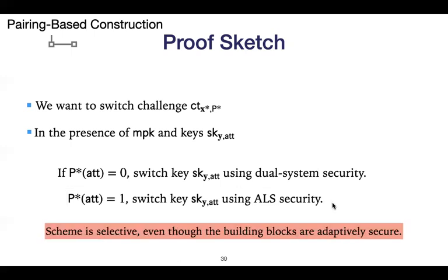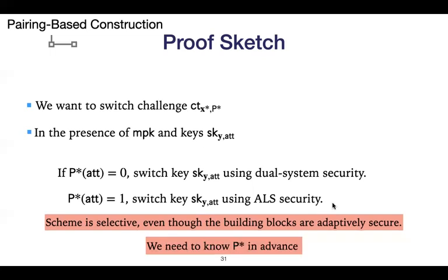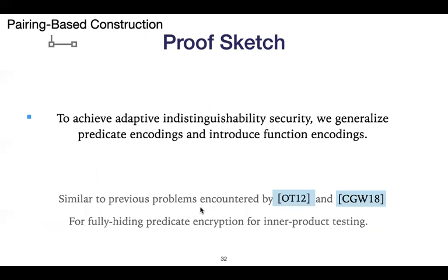What I want to mention is that the scheme is selective even though the building blocks are adaptively secure, and to see why: we need to know in advance not necessarily the full policy, but just the bits 0 or 1 — specifically, whether p* of at will be 0 or 1 — so that we know which branch to use when switching the key.